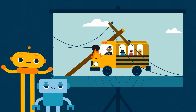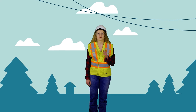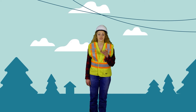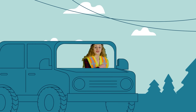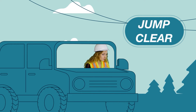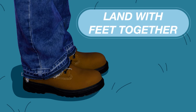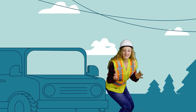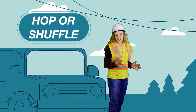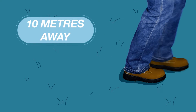But what if the car is on fire? There is a way to exit safely — but only if you have to get out because your life is in danger. Open the car door and jump clear without touching the car or the ground at the same time. Land with your feet together, then hop keeping your feet together, or shuffle without lifting your feet, keeping them touching until you're about 10 meters away.